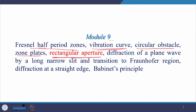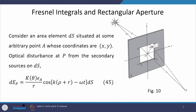Since we are in the Fresnel diffraction regime, we will deal with this rectangular aperture through the vibration curve and will also talk about Fresnel integrals. The rectangular aperture is shown schematically in the figure, associated with the capital sigma plane. The coordinate system has the y-axis pointing horizontally and the z-axis pointing vertically. The origin is situated right at the center of the rectangular aperture. The aperture extends from y1 to y2 horizontally and z1 to z2 vertically.